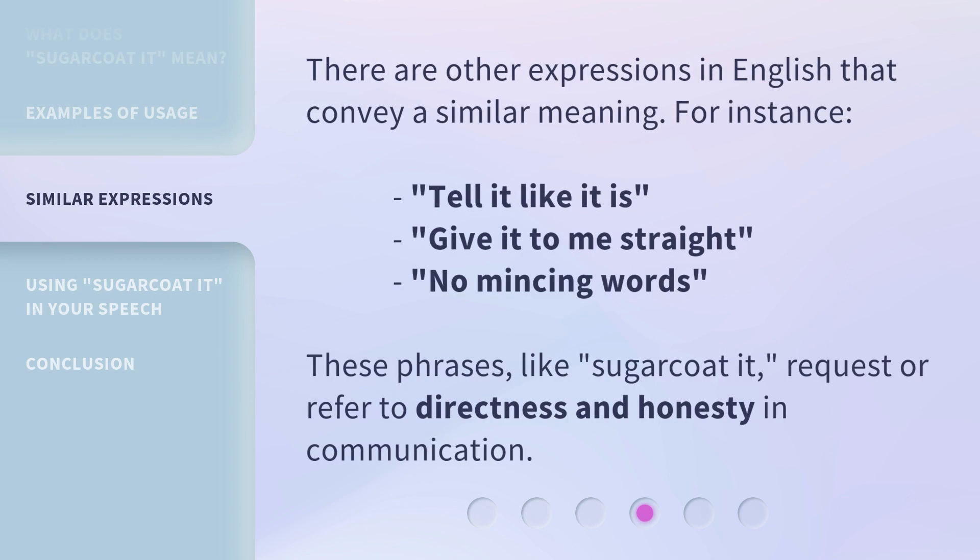There are other expressions in English that convey a similar meaning. For instance: 'tell it like it is,' 'give it to me straight,' and 'no mincing words.' These phrases, like 'sugarcoat it,' request or refer to directness and honesty in communication.